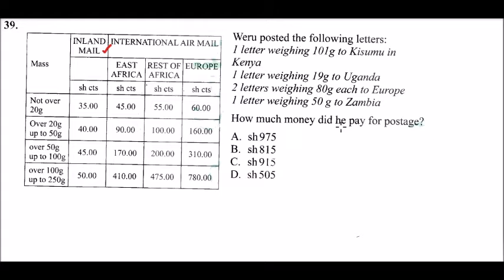For the 101 grams letter to Kisumu, this lies in the last category — over 100 grams up to 200 grams. Because it is in Kenya, he paid 50 shillings. That is the amount for the first letter.